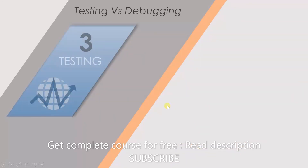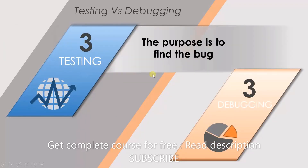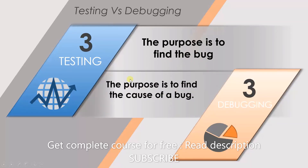The final difference is as follows. The purpose of testing is to find the bug. But when we are debugging, our purpose is to find the cause of the bug. In debugging, we don't focus on finding bugs — we are concerned with what is causing the bug to appear.